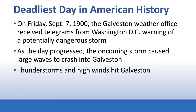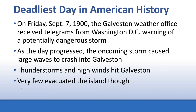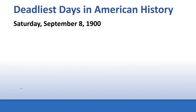Very few people actually evacuated the island. Galveston is an island right off the coast of Texas, connected in 1900 by several bridges to the mainland. On Saturday, September 8th, very early in the morning, the storm began to batter Galveston.